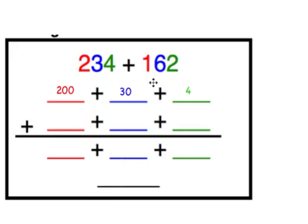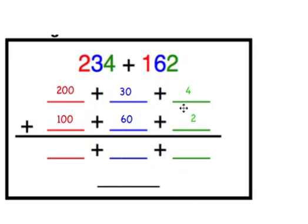Next let's look at the number 162. The digit one in the hundreds place has a value of 100. The digit six in the tens place has a value of 60. The two in the ones place has a value of two. So 162 written in expanded form is 100 plus 60 plus 2.